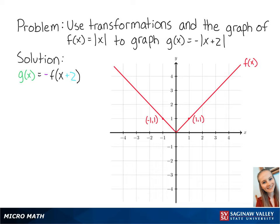g(x) is equal to negative f(x+2). The negative function means that we will reflect the graph over the x-axis.